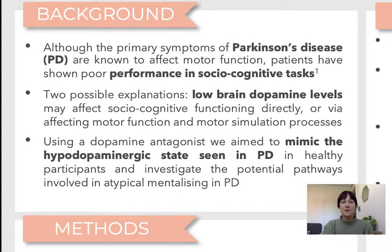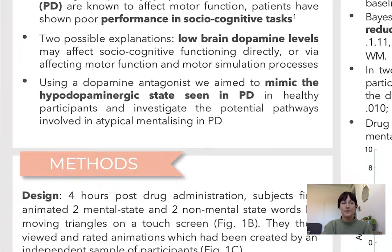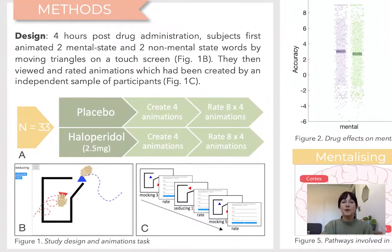We used the dopamine antagonist haloperidol to explore these potential pathways in a healthy adult sample. Our participants came in on two separate days and took 2.5mg haloperidol on one and placebo on another day. Haloperidol is a classical antipsychotic and lowers brain dopamine levels by occupying D2 dopamine receptors.